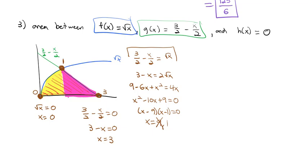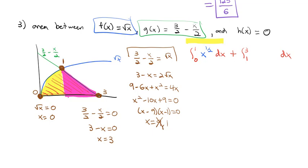Now we have everything we need. We set up our integrals. First, we integrate from 0 to 1 — the yellow part — where the blue function is on top: the square root of x, or x to the 1 half, dx. In addition, we have the right part — the green line — integrating as x goes from 1 to 3 of 3 halves minus x over 2 dx. That's the pink function representing the pink part of the shape.